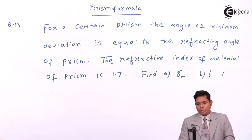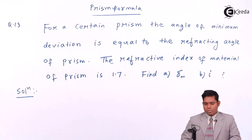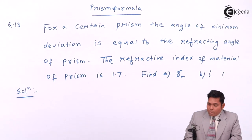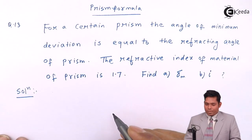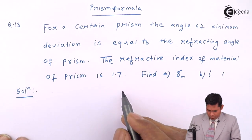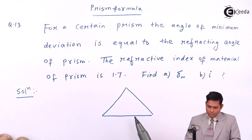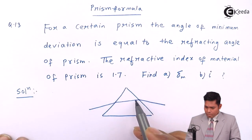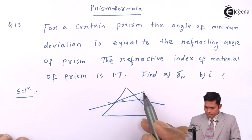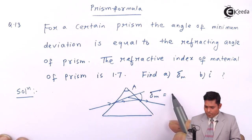Now the solution to this question is: for a certain prism, let us consider, the angle of minimum deviation is equal to A. This is given.